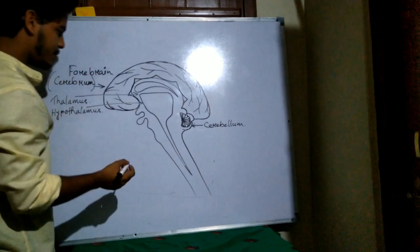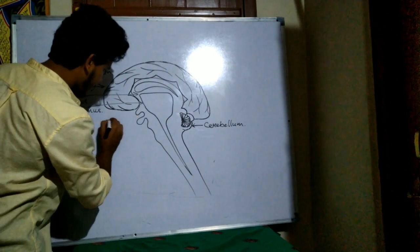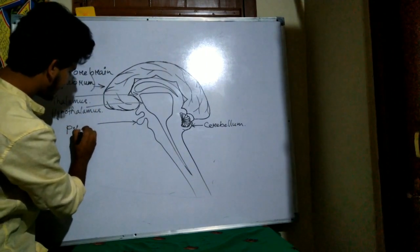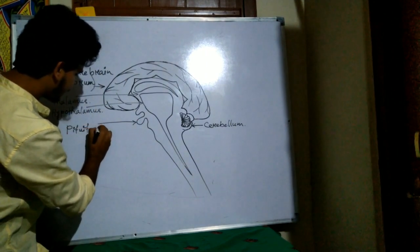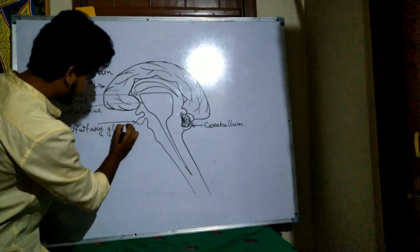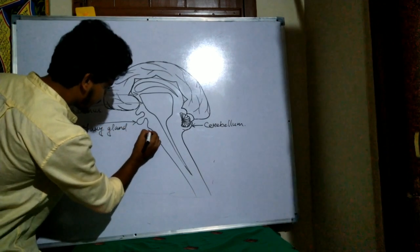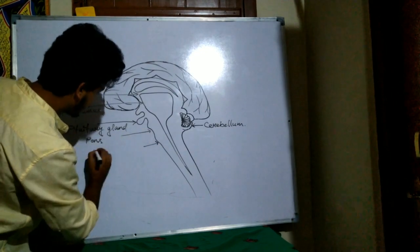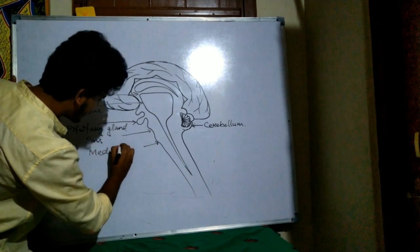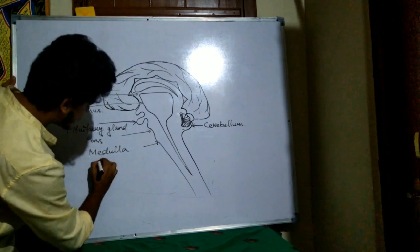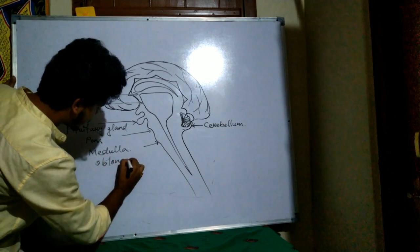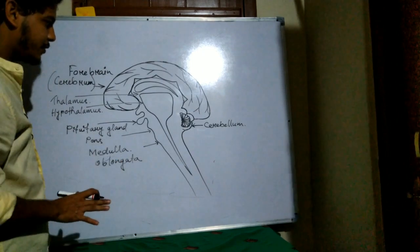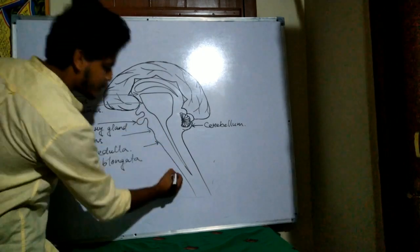And we have here pituitary gland, and we have pons here. And here we have our medulla oblongata. Medulla oblongata. And these are the different parts of our brain. And this is our spinal cord.